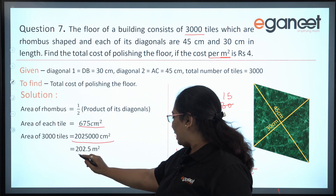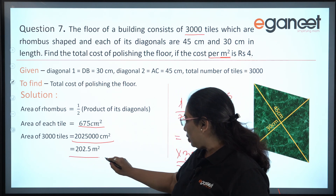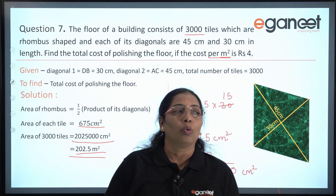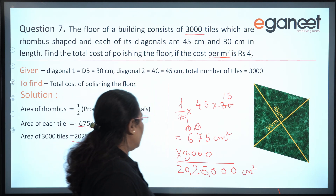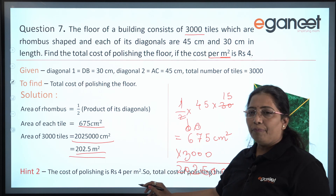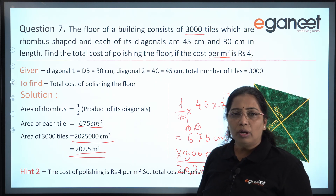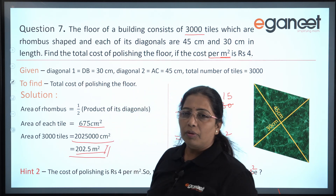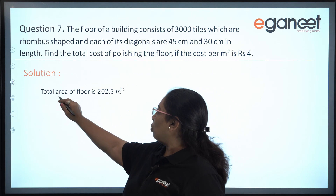So the area of the total floor in meter square is 202.5 meter square. Is the problem over? No, we have to find the cost of polishing the total floor. The cost of polishing is rupees 4 per meter square, so we have to multiply the total floor area by 4.